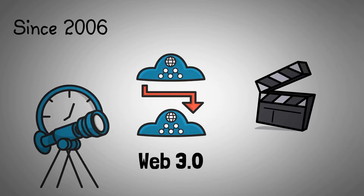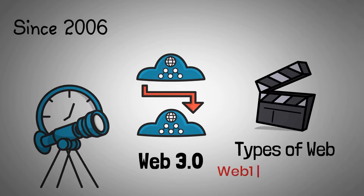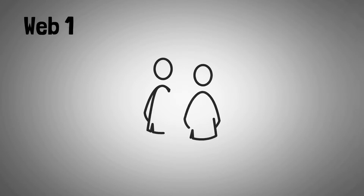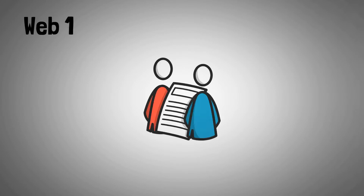Stick to the video to learn about each type of web, their strengths and weaknesses, and how they compare. Let's start with Web 1.0, which is all about reading and finding information in layman's terms.